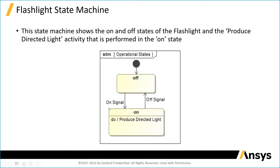We have an on signal that will take you from off to on, and an off signal will trigger you from on to off. It's a very simple state machine, but it also shows that the produced directed light function occurs in the on state and clearly doesn't happen in the off state.